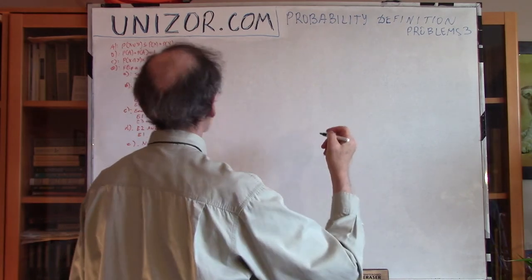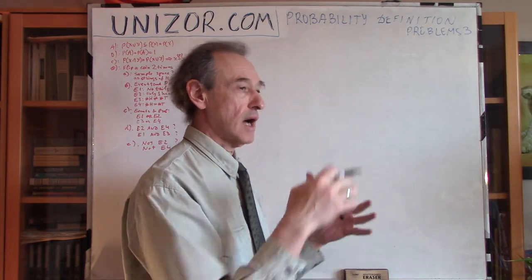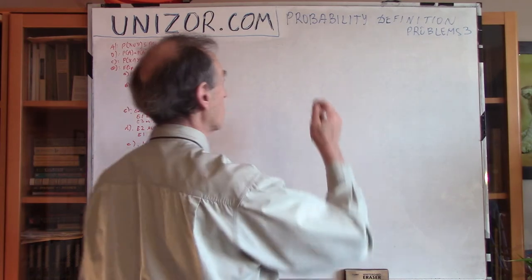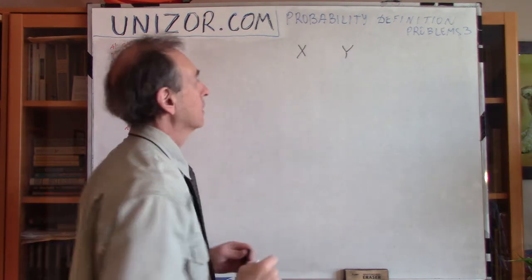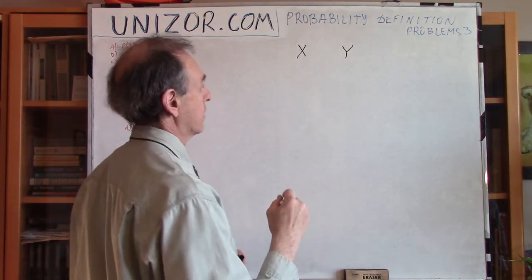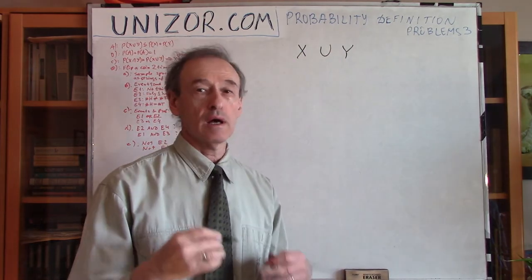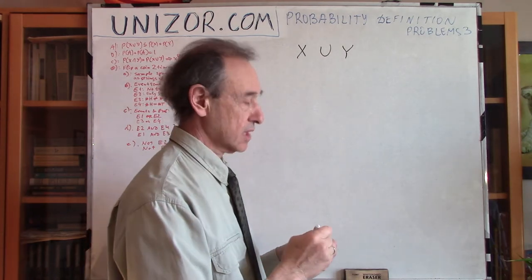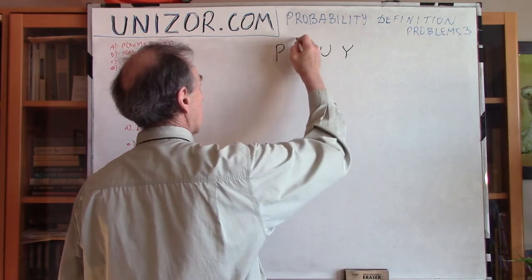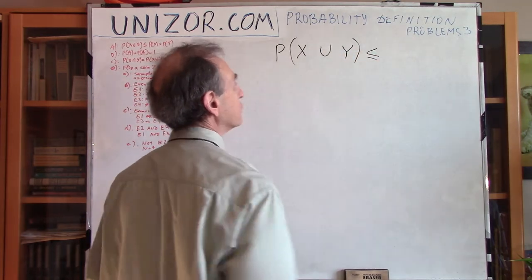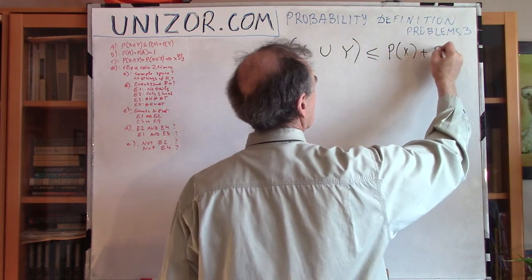Let's consider you have a certain sample space which contains certain elementary events, and from these elementary events we have composed two different events, X and Y. The next event is the union of these — it's OR basically — so the condition is event X or event Y happens. This event has a probability, and I would like to prove that this probability is less than or equal to the sum of their probabilities.